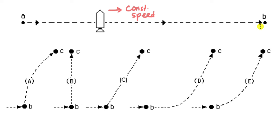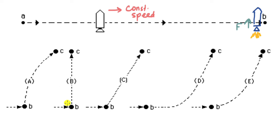When it reaches point B, the rocket engine starts. There is a constant force acting upward — let me draw the rocket at B. At this point there is some sort of thrust, and because of this there is a force acting on the rocket in the upward direction. The engine doesn't shut off after point B; there is a constant force acting on the rocket from point B onwards in the upward direction.